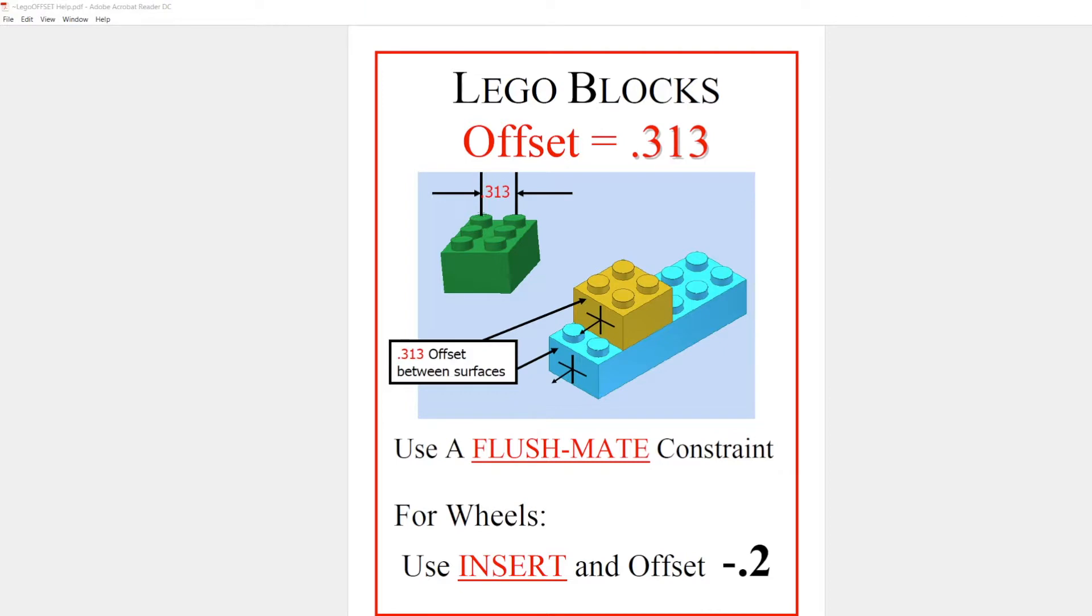313 is the distance between the center point of the pins on any of the Legos in any direction.